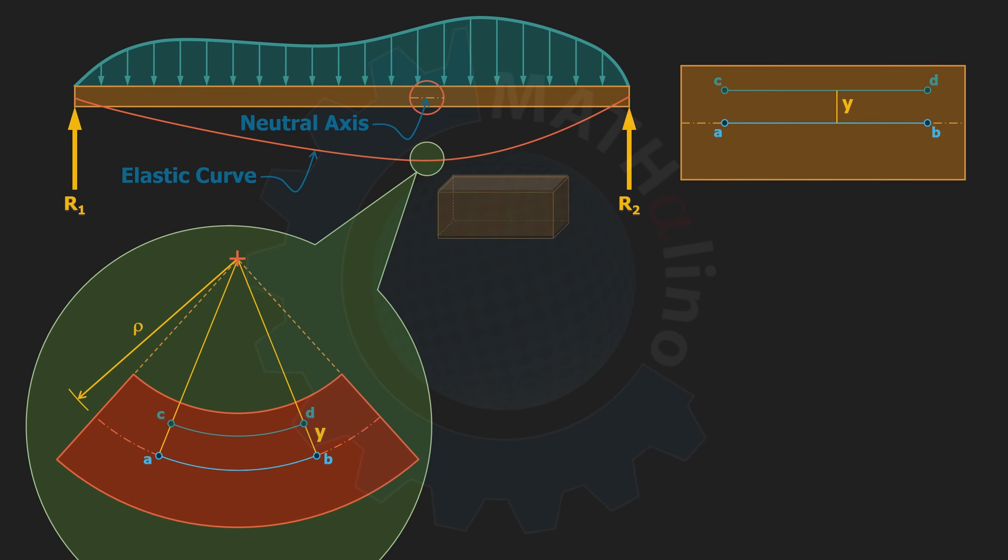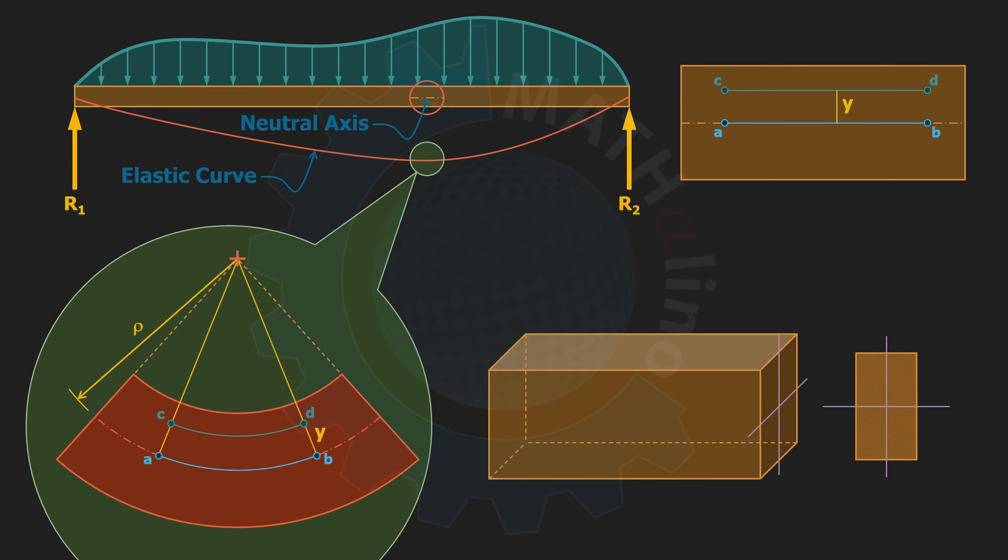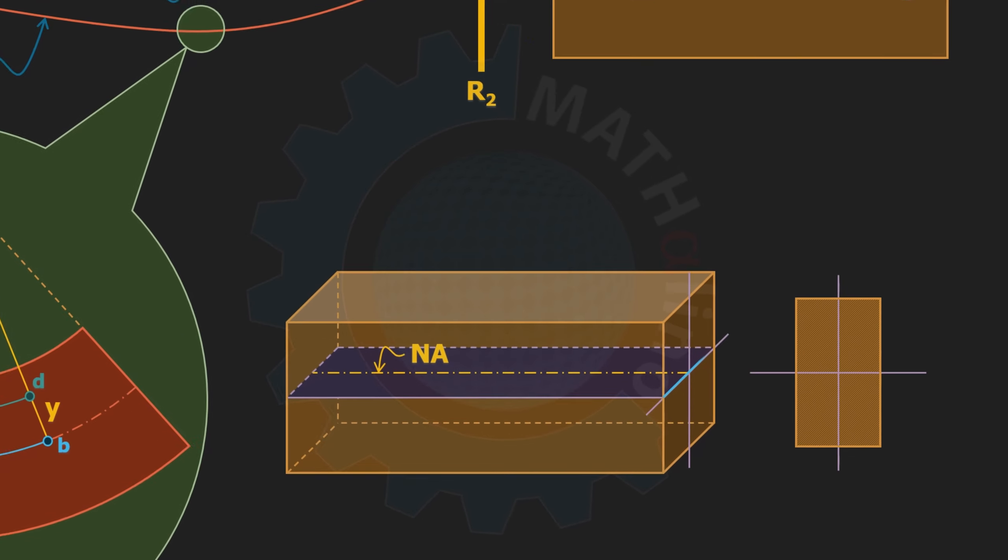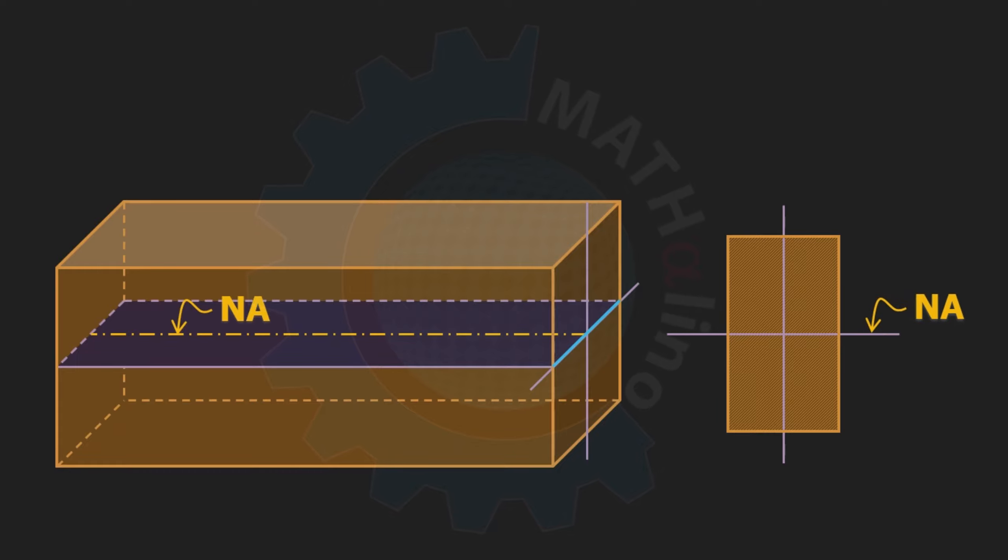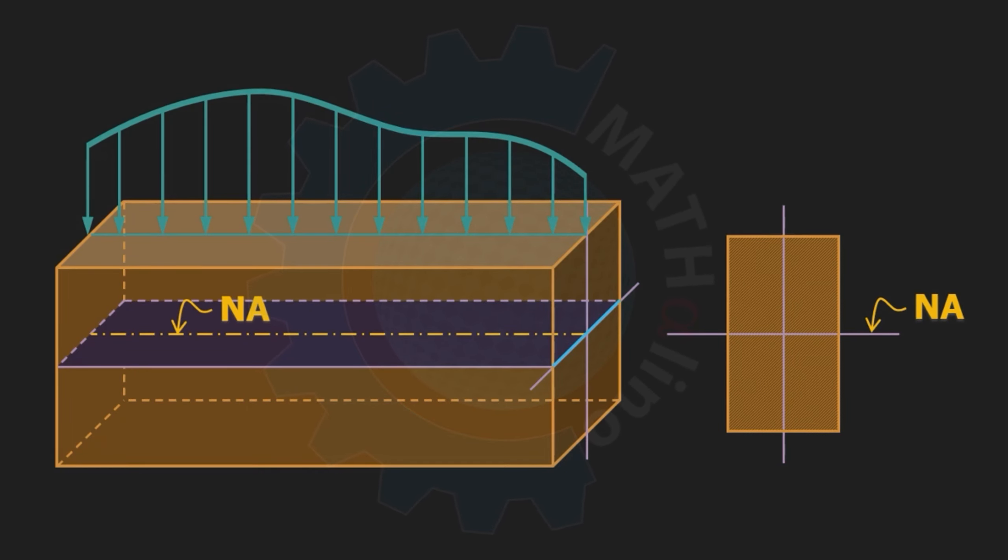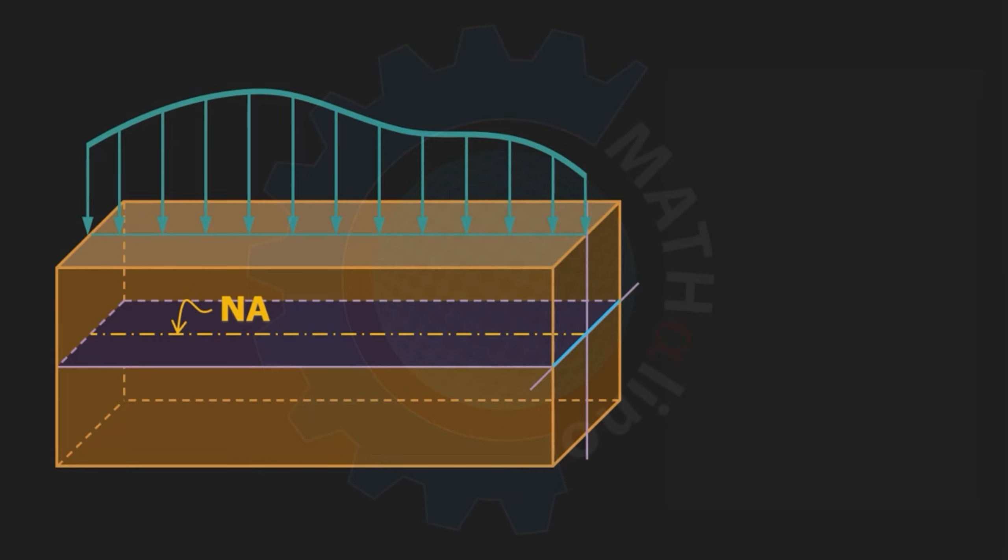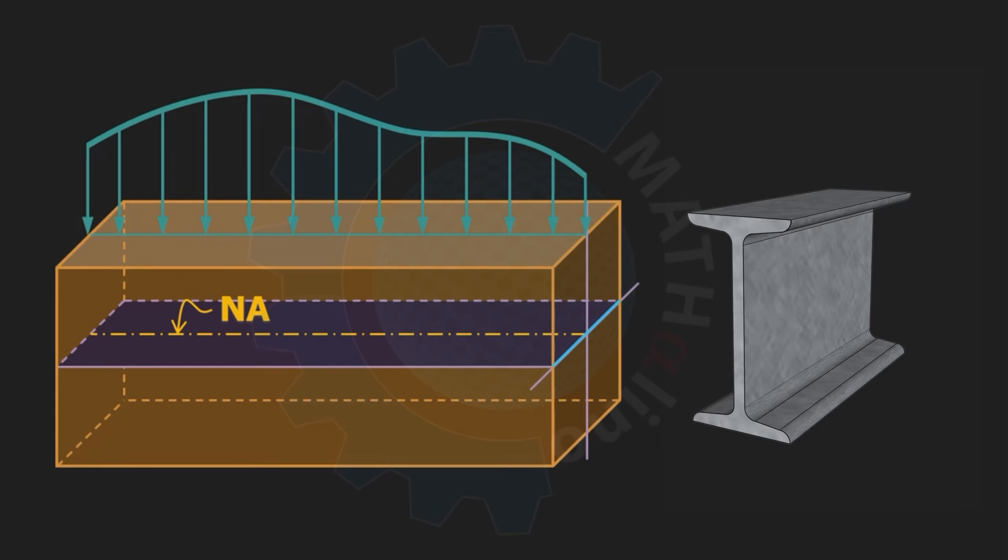Let us go back to our undeformed beam. May I reiterate that our neutral axis is actually a surface, and at the cross section we usually label it with NA in our drawing. Note that NA contains the centroid of our section, and from our assumption number five, the principal axis of bending usually contains the axis of symmetry.